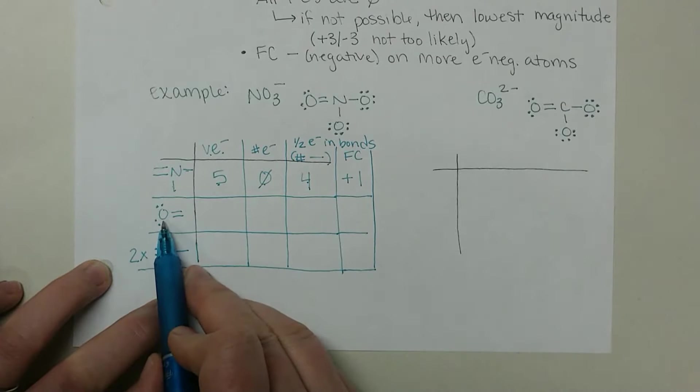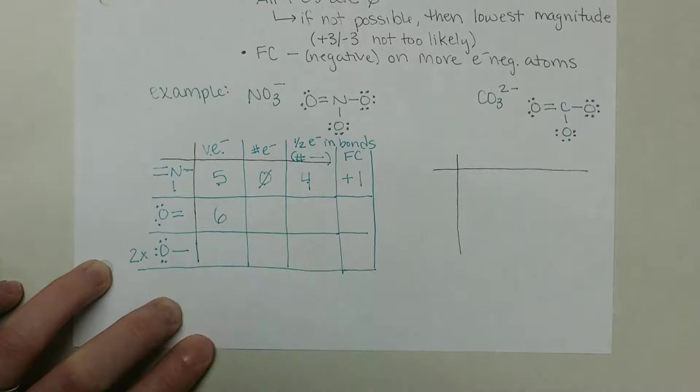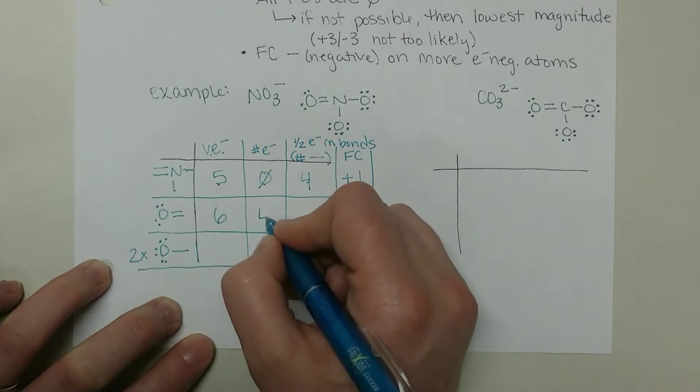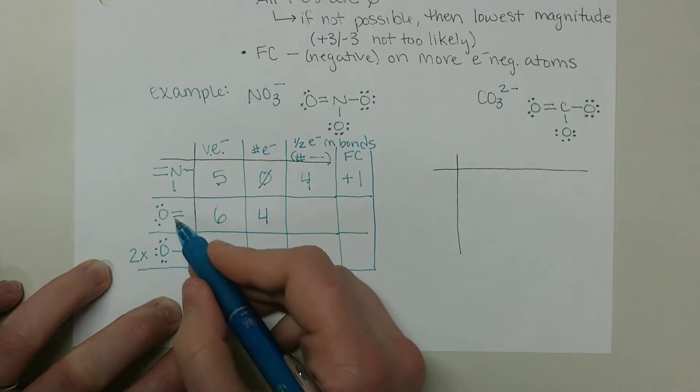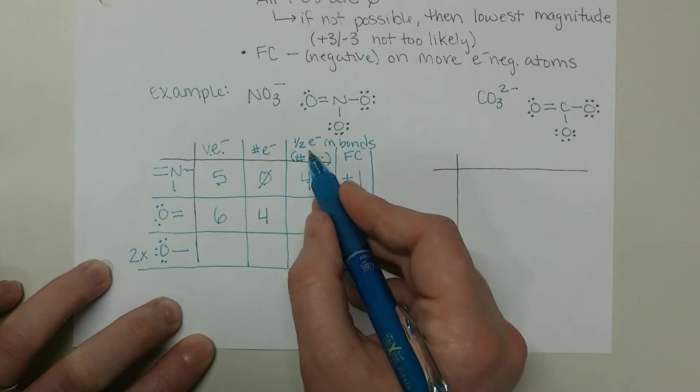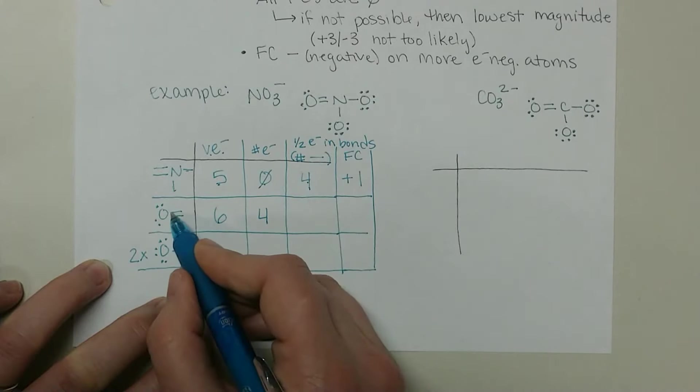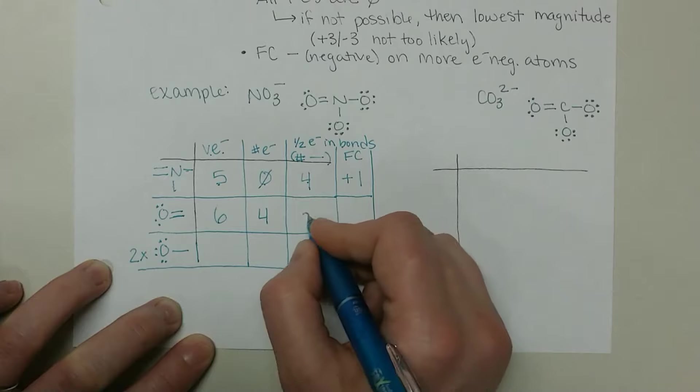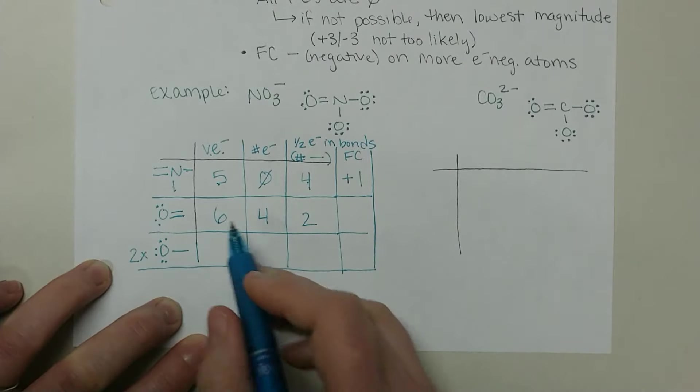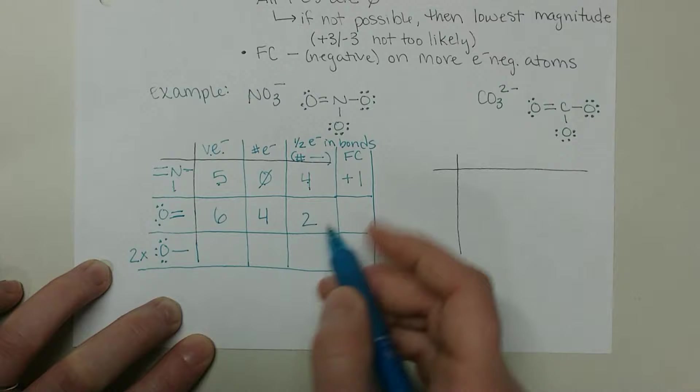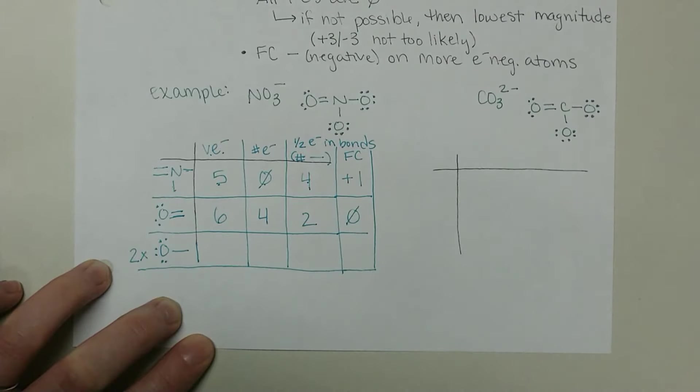The double bonded oxygen - we have six valence electrons, four dots, and there are four total electrons in this shared double bond, so half of that would be two. Or I count that there are two lines, so I draw two. Six minus four minus two is zero.